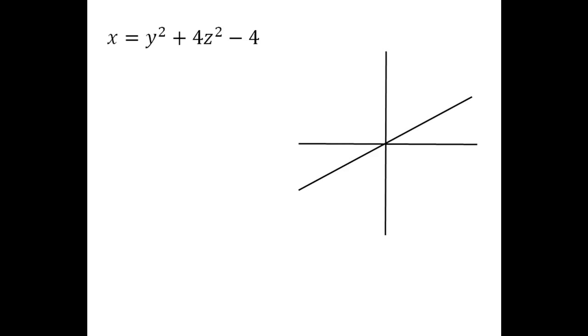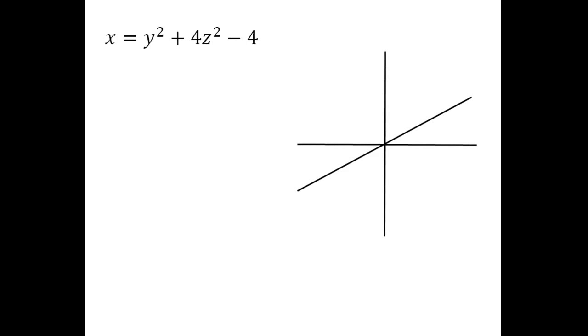We're going to look at graphing the surface x equals y squared plus 4z squared minus 4 in R3. I have some axes set up over here already and I'm going to label them. The one coming to the right is our positive y-axis, the one coming out of the paper toward us is the positive x-axis, and the positive z-axis is going straight up — standard orientation.